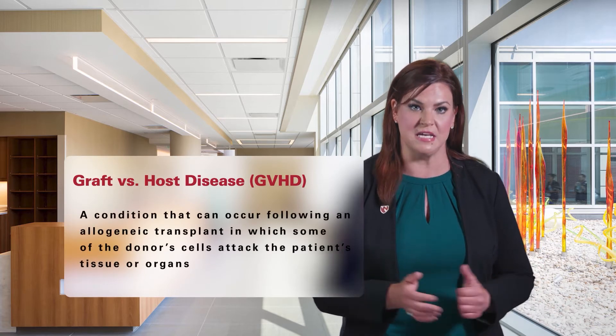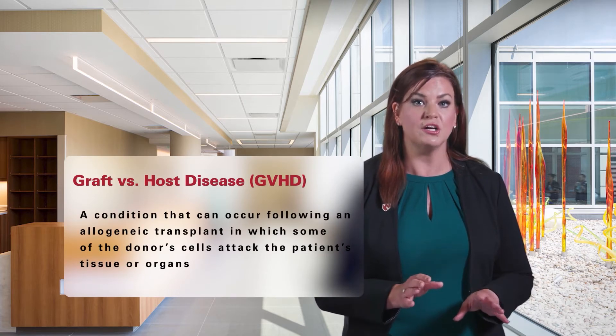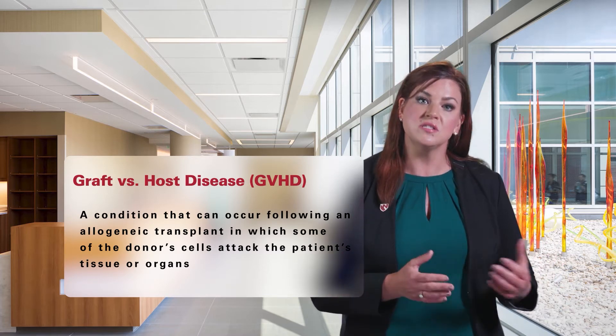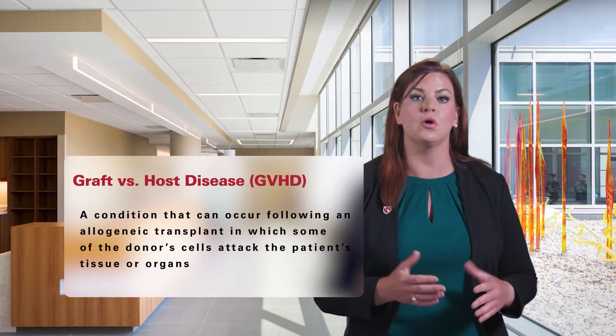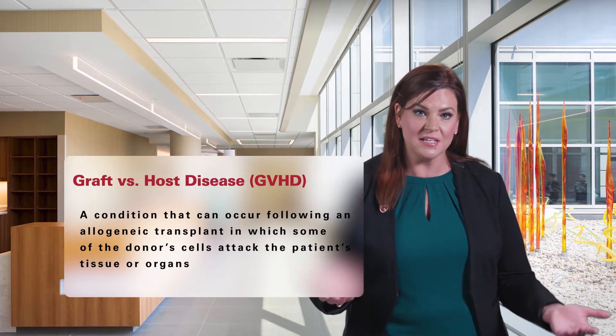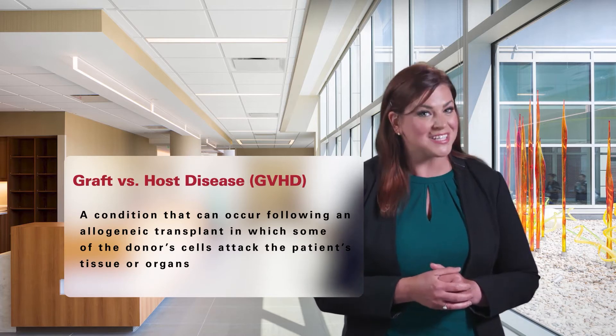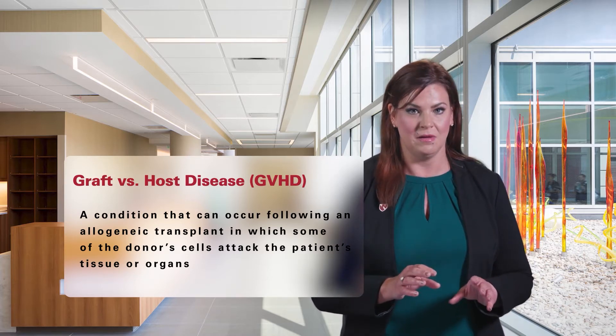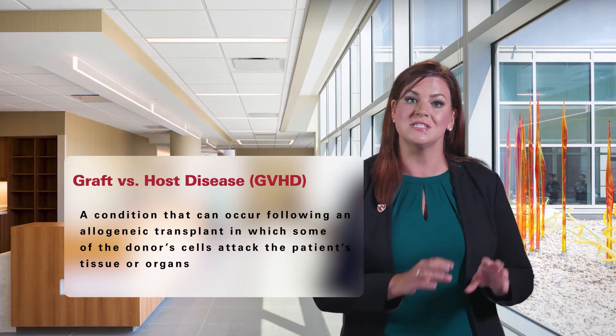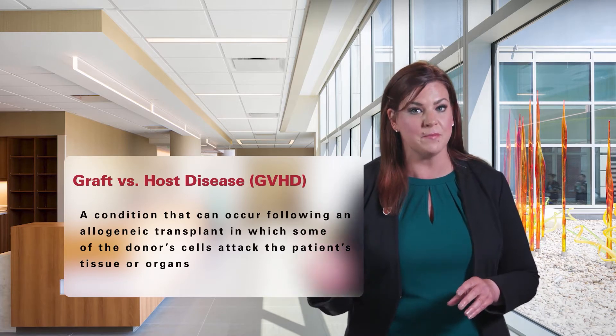One of the most common complications following an allogeneic transplant is graft-versus-host disease, or GVHD. Graft-versus-host disease is a condition that can occur following an allogeneic transplant in which some of the donor cells attack the patient's tissue or organs. In an allogeneic stem cell transplant, the donor's stem cells look at the tissue and organs of the recipient and see this new home, or host, as foreign. The donor's white blood cells can attack its new foreign environment, and when this happens, the patient has graft-versus-host disease.